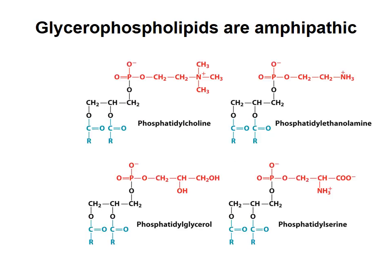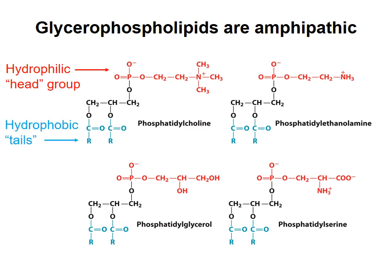A few different glycerophospholipids are shown here. Notice that they all have polar or hydrophilic head groups, shown in red, and hydrophobic tail groups, shown in blue. In this diagram, the letter R represents the long hydrophobic chains from the fatty acyl parts of the molecule. If part of a molecule is hydrophilic and another part is hydrophobic, the molecule is called amphipathic. Their amphipathic nature makes glycerophospholipids ideal molecules to form the basis of biological membranes, as I'll show in another video.